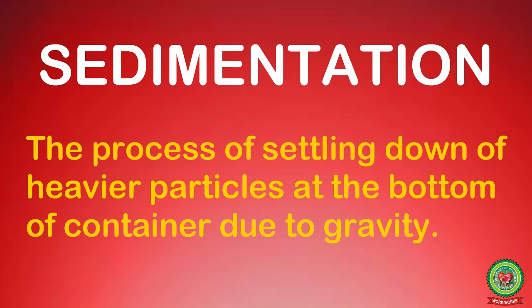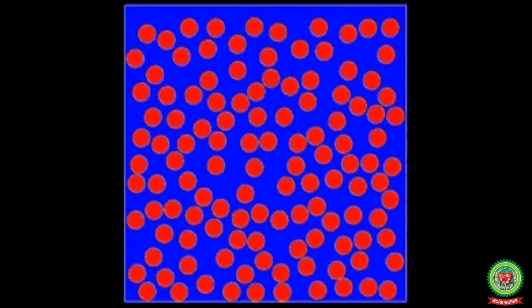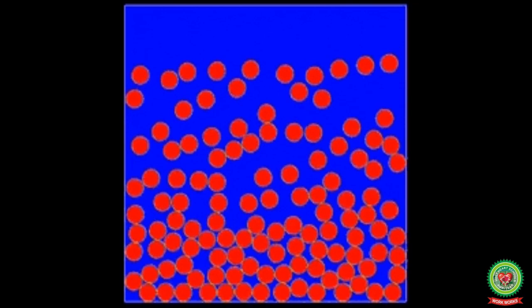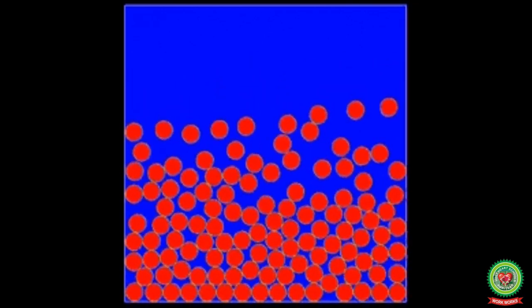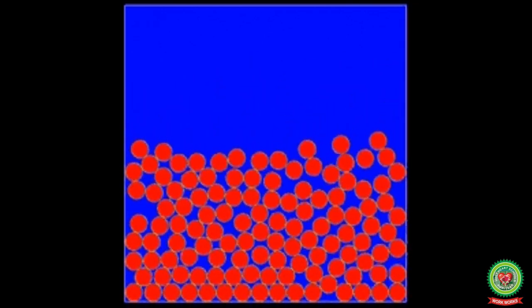Now underline the word 'sedimentation' and write its definition: the process of settling down of heavier particles at the bottom of a container due to gravity. So during sedimentation, the heavier particles settle at the bottom of the liquid.